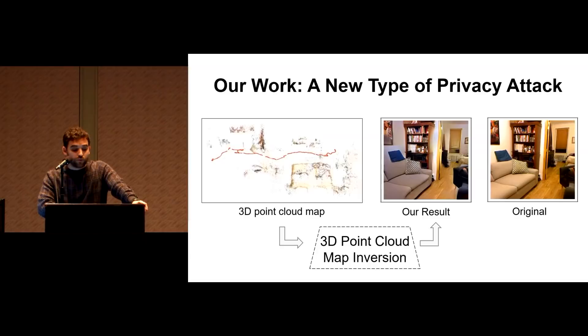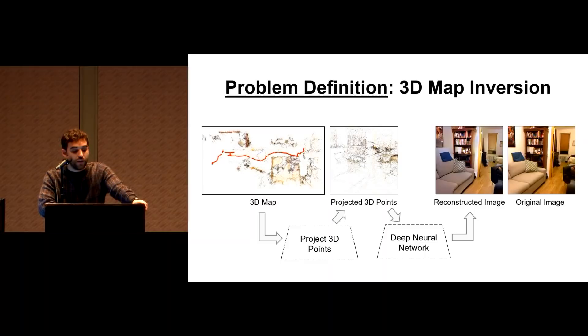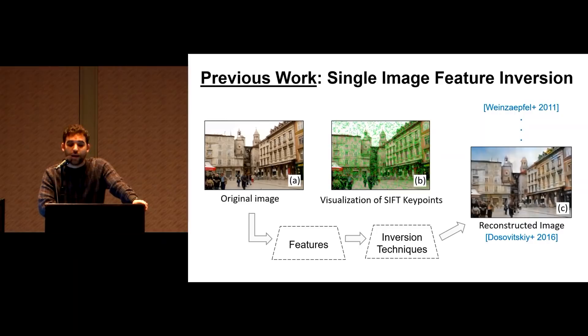This shows that the privacy implications of persistent spatial mapping are more serious than what is currently assumed. So more formally, the attacker's goal is to reconstruct a color image of the scene from a 2D projection of a sparse 3D point cloud. And for the purposes of this project, we assume the attacker will train a deep neural network to perform this task. So while there has been no previous work on inverting 3D maps, there has been plenty of work on single image feature inversion. That is, on reconstructing an image from a set of features extracted from that same image. So what exactly is the difference between these two problems?